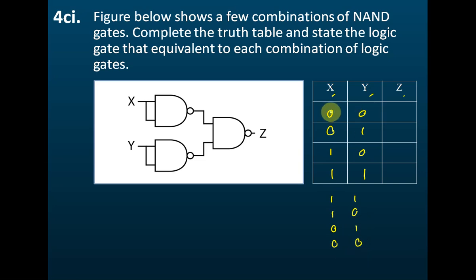So if this is the input, let's copy the input here. For input X: 0, 0, 1, 1, and this one also 0, 0, 1, 1. The second one is 0, 1, 0, 1. So when the signals go into this NAND gate, you will find that the output you get will be 1, 1, 0, 0 and 1, 0, 1, 0.